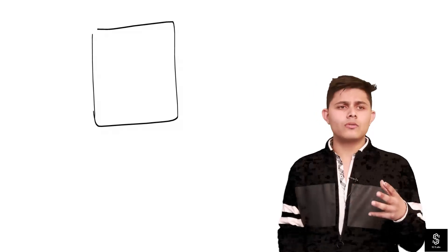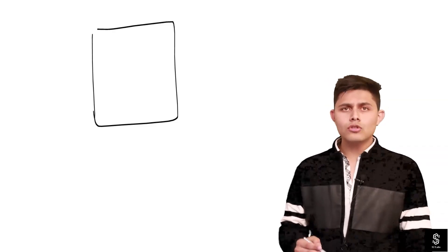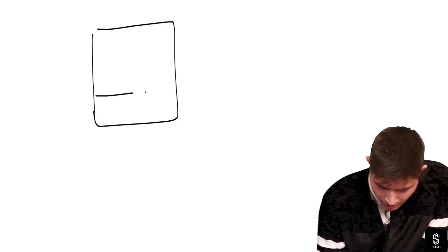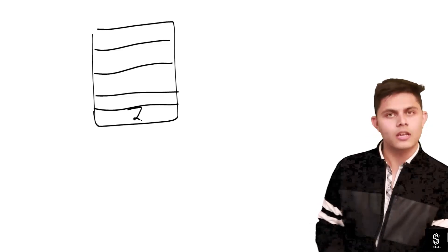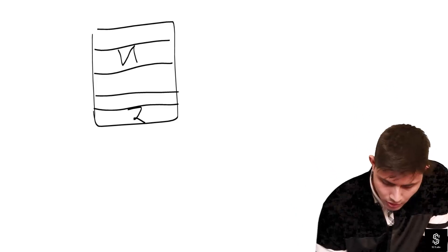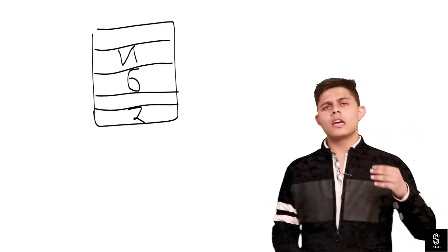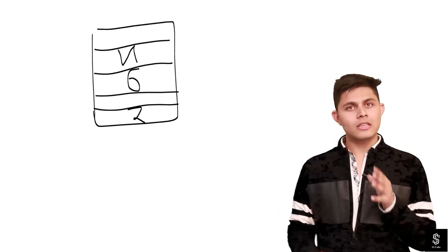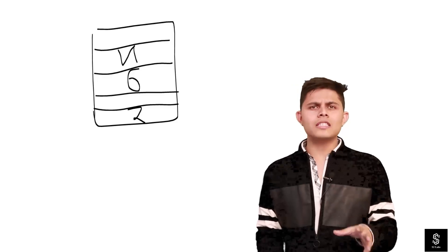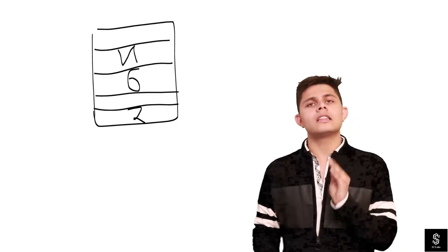Let me create a simple diagram to explain how values get stored into a Set. Imagine this is a Set of integers. If you want to store 2, it can be stored anywhere — there's no fixed position. If you store 4, it can go anywhere as well. If you store 6, same thing. As you can see, the order is not maintained in a Set.